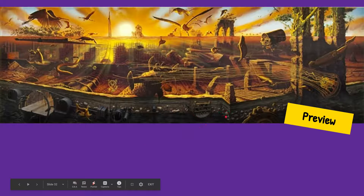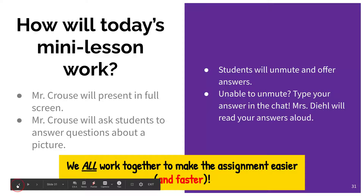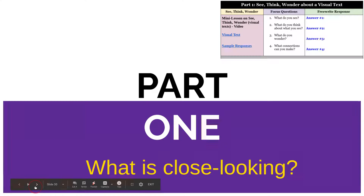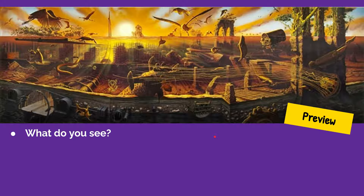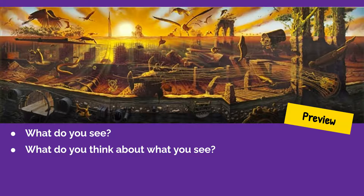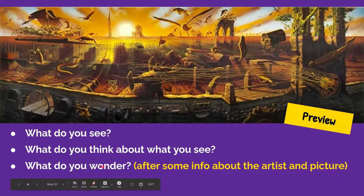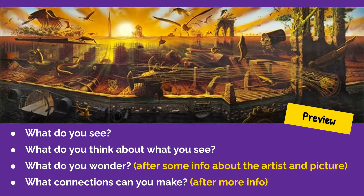This is the picture we're going to be working with. It may look a little blurry on your screen, but if you pause the video and go back to the notebook time activity, click the link that says 'visual text' — it will present you with a larger and clearer picture. Now that you've taken a look at the picture, we're going to answer these questions: what do you see? What do you think about what you see? What do you wonder? And what connections can you make between yourself and this picture — after we give you a little more background information.